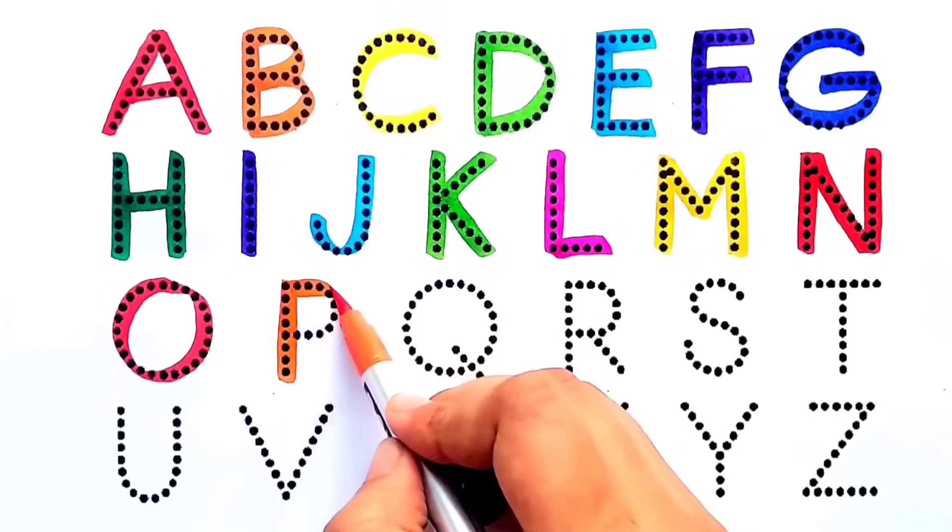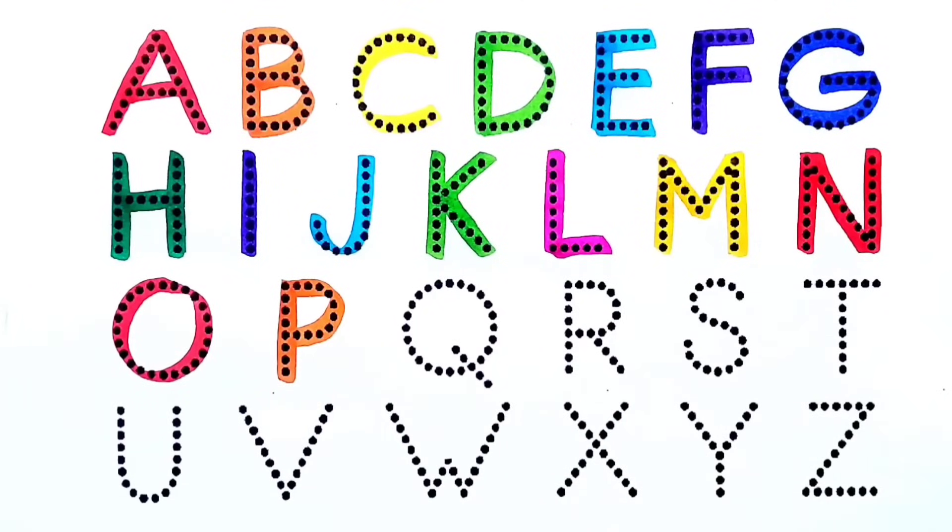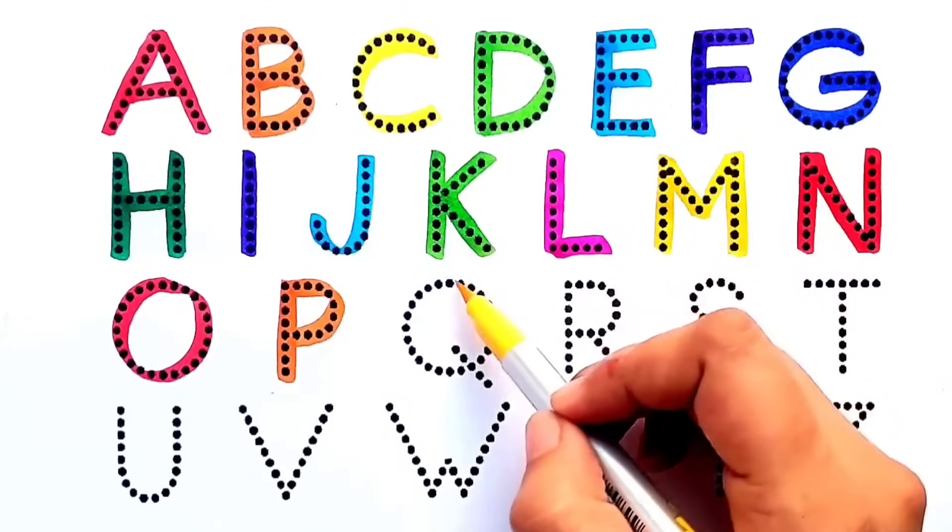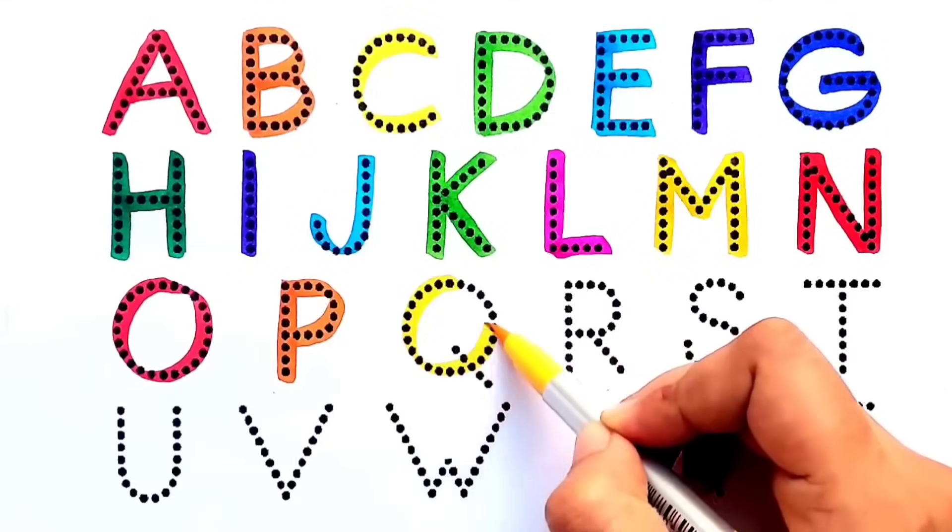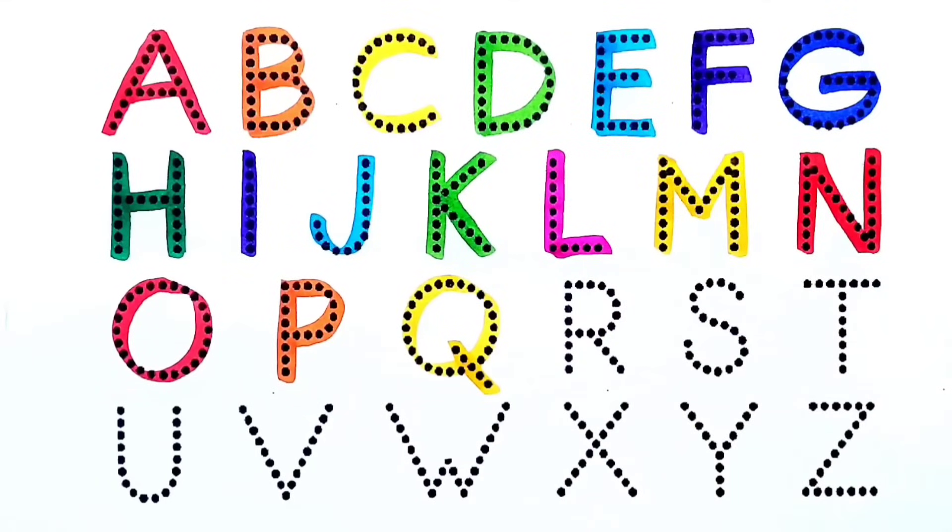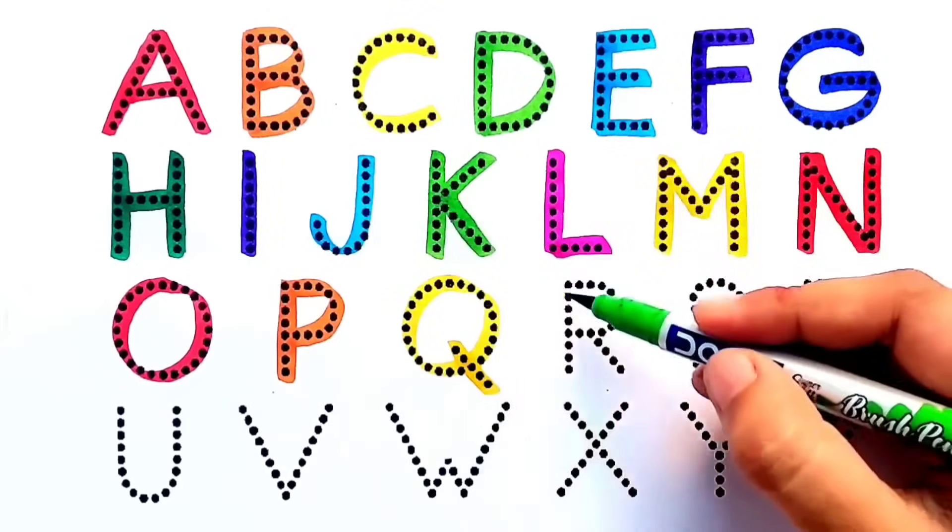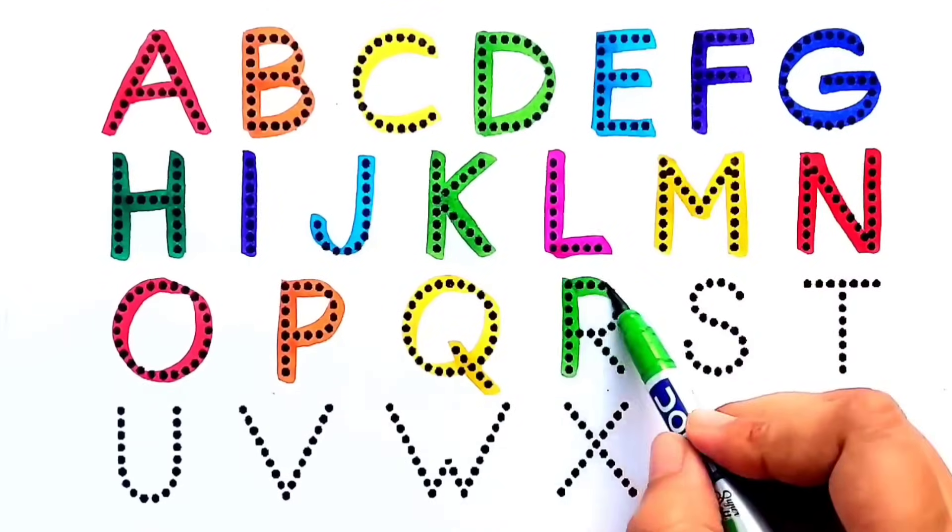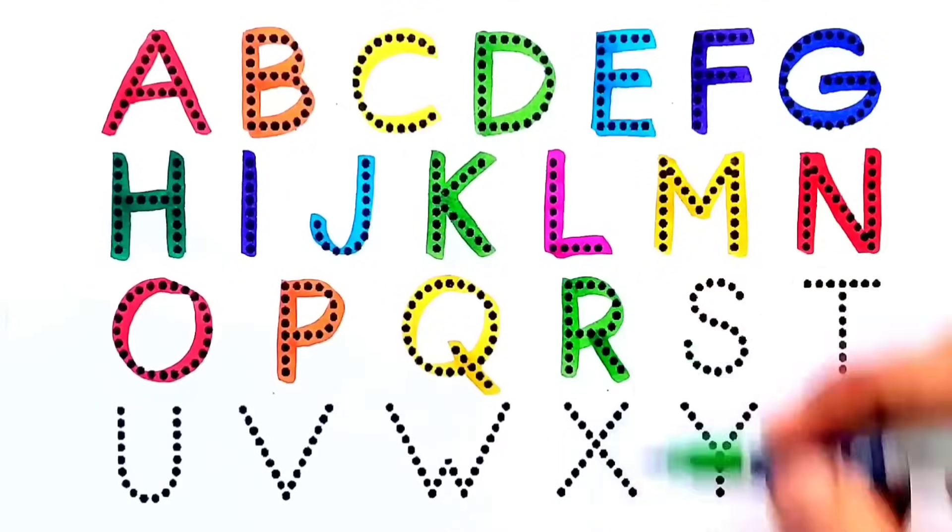Orange color: P, P for pigeon. Yellow color: Q, Q for quilt. Light green color: R, R for rose.